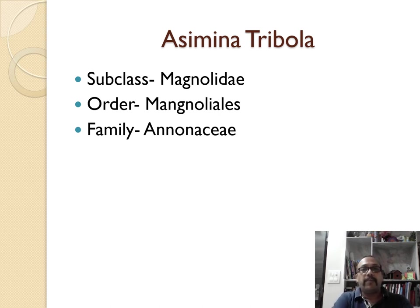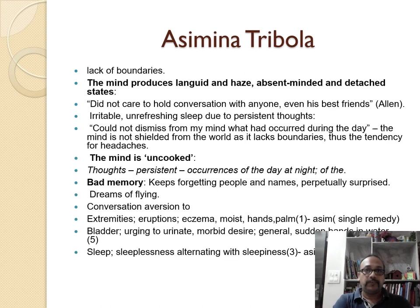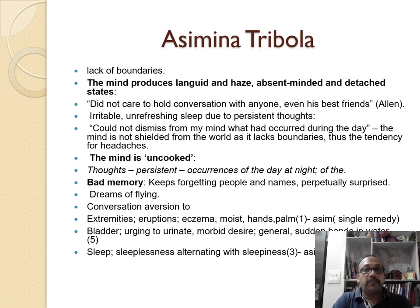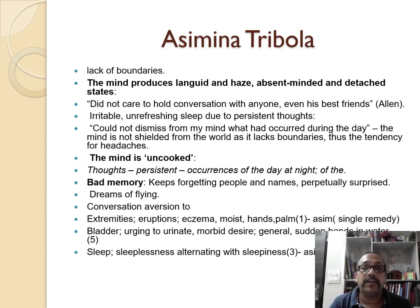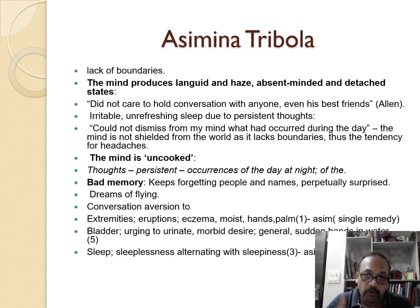We start with the first medicine of this subclass: Asimina triloba — subclass Magnolia, order Magnoliales, family Annonaceae. Asimina triloba has a lack of boundary. This is a mind that produces language but is absent-minded and detached — does not care to hold conversation with anyone, even his best friend. As narrated by the prover: irritable, confusing, unrefreshing sleep due to persistent thoughts. Could not dismiss from mind what had occurred during the day. The mind is not shielded from the world as it lacks boundary, hence the tendency for headache and persistent occurrences of bad memories.